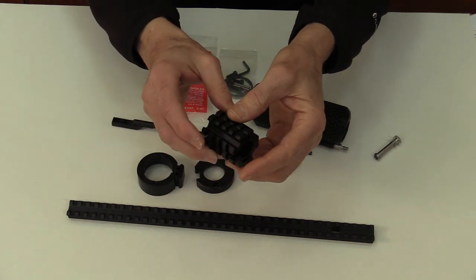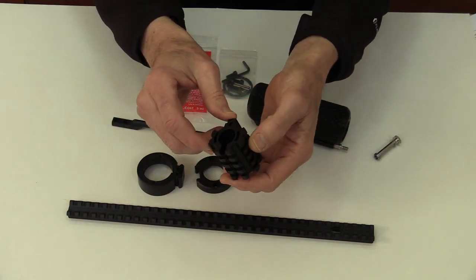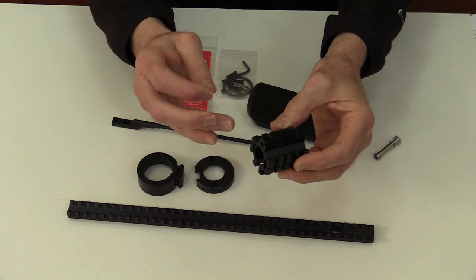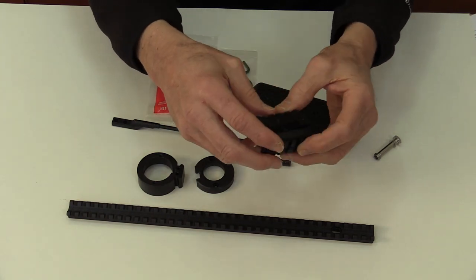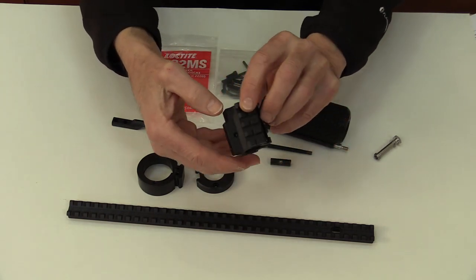A modified gas block. One function is to block the gas port in the barrel so no gases escape. The second function is to support the front end of the picatinny rail.